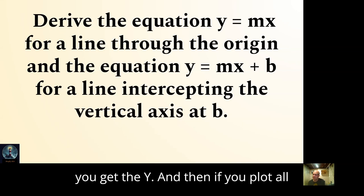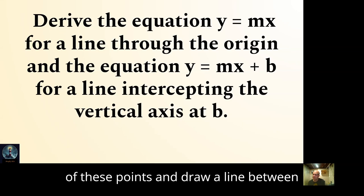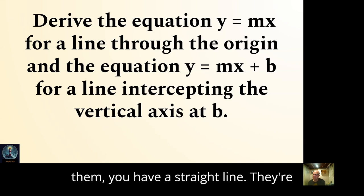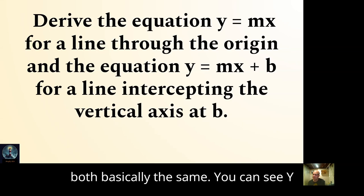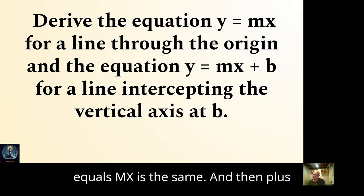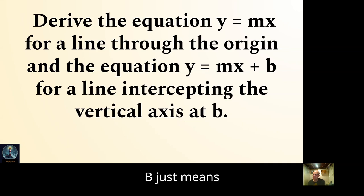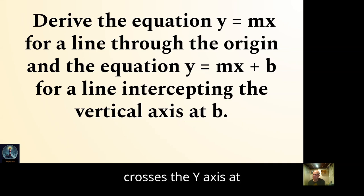If you plot all of these points and draw a line between them, you have a straight line. Both equations are basically the same — y equals mx is the base form, and plus b just means the line crosses the y-axis at b.